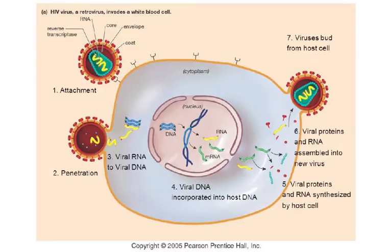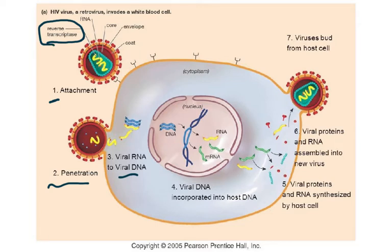Now let's look at how the HIV virus, which is a retrovirus meaning it has RNA, invades a white blood cell. Step one is attachment, step two is penetration. The viral RNA is then converted to viral DNA because HIV contains an enzyme called reverse transcriptase — transcription normally goes DNA to mRNA, but here it's RNA to DNA. Step four: viral DNA is incorporated into the host DNA.